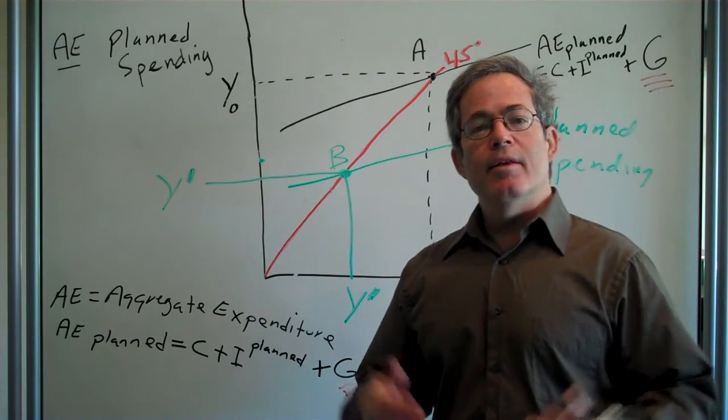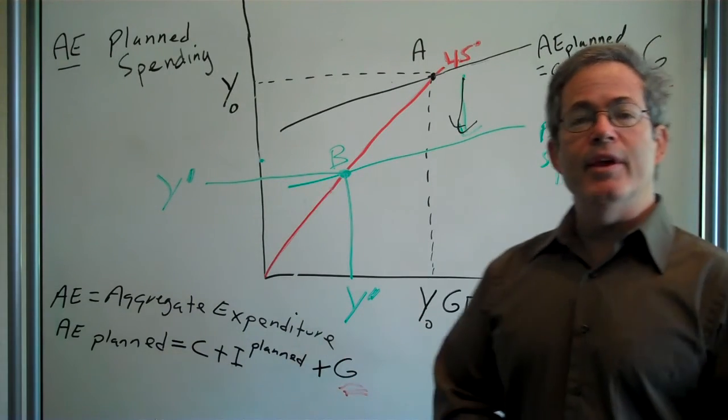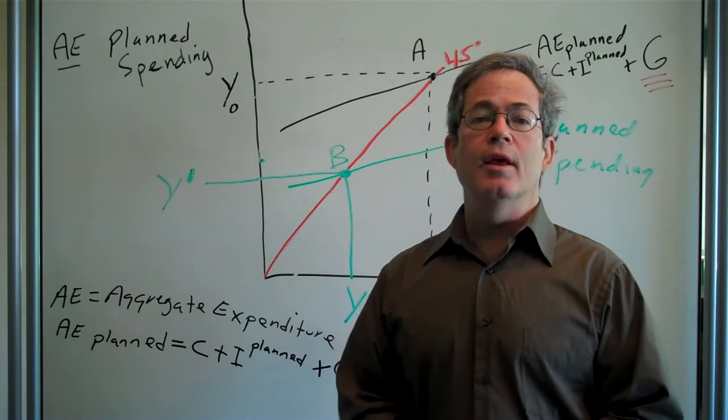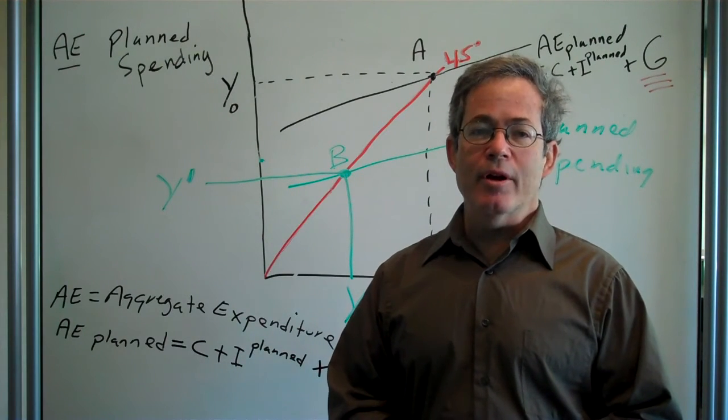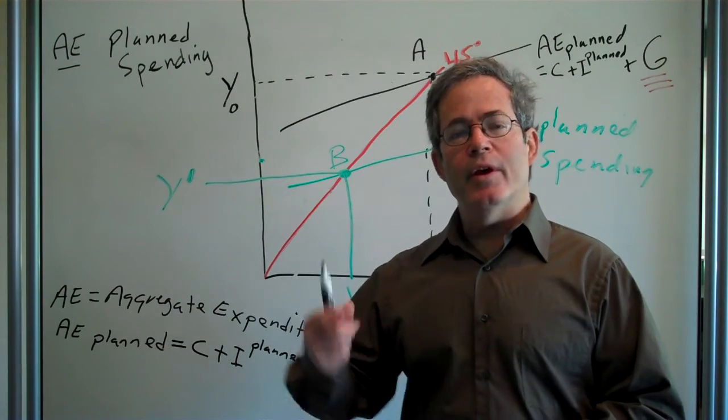And Keynes said it will just stay at this lower level, Y prime, unless something is done. And what can the government do? The government can come in, spend money, hire workers who then will create more jobs throughout the economy.